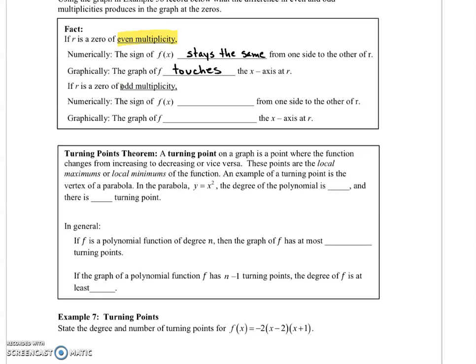If r is of odd multiplicity, then the sign of f(x) changes from one side of the x-intercept to the other. And the graph crosses the x-axis at that intercept r.